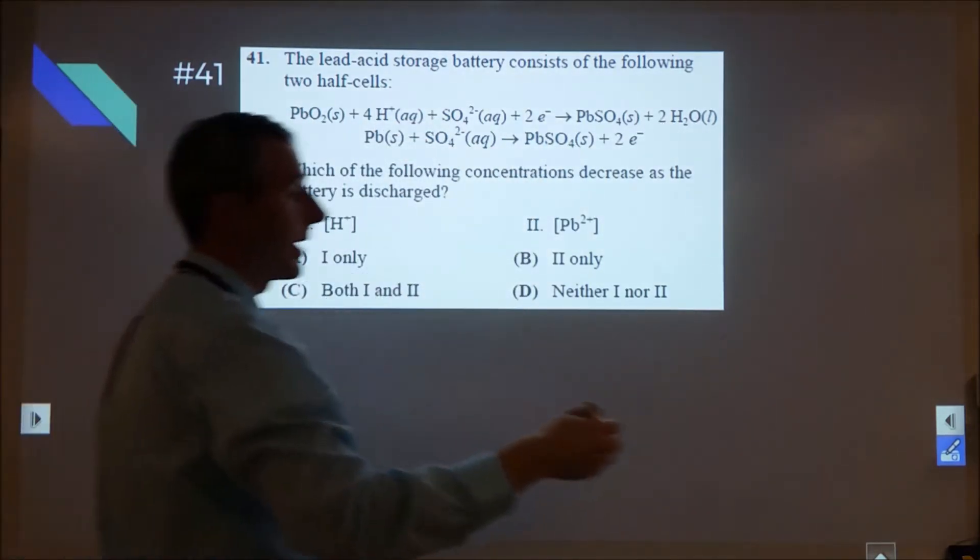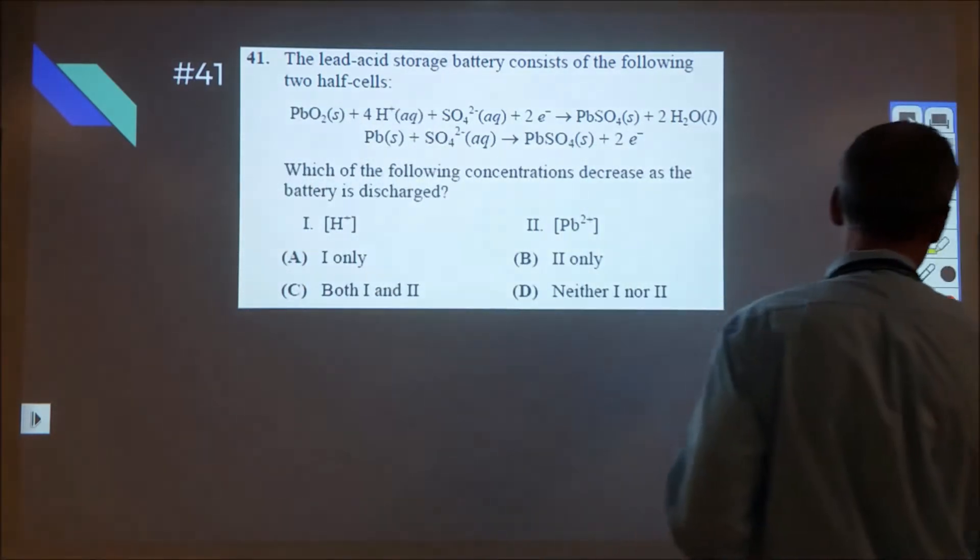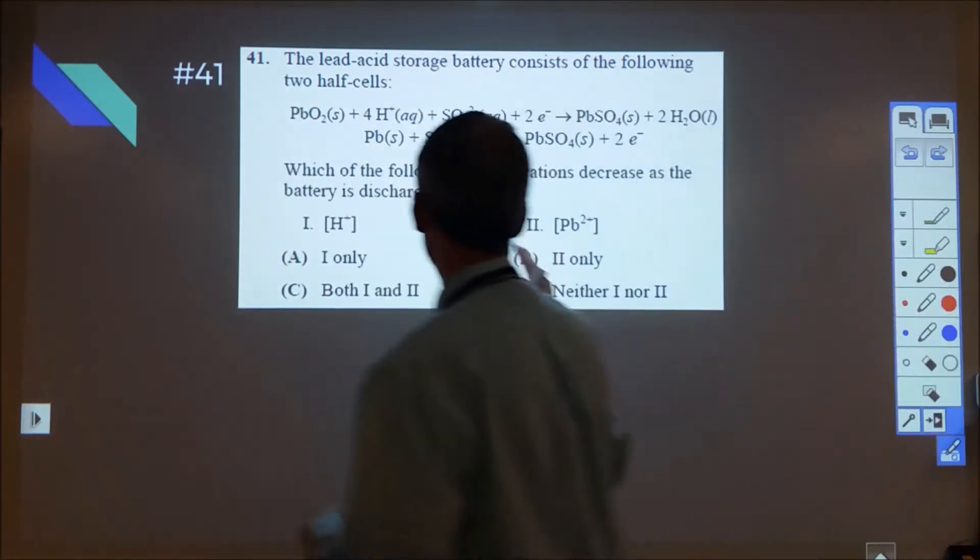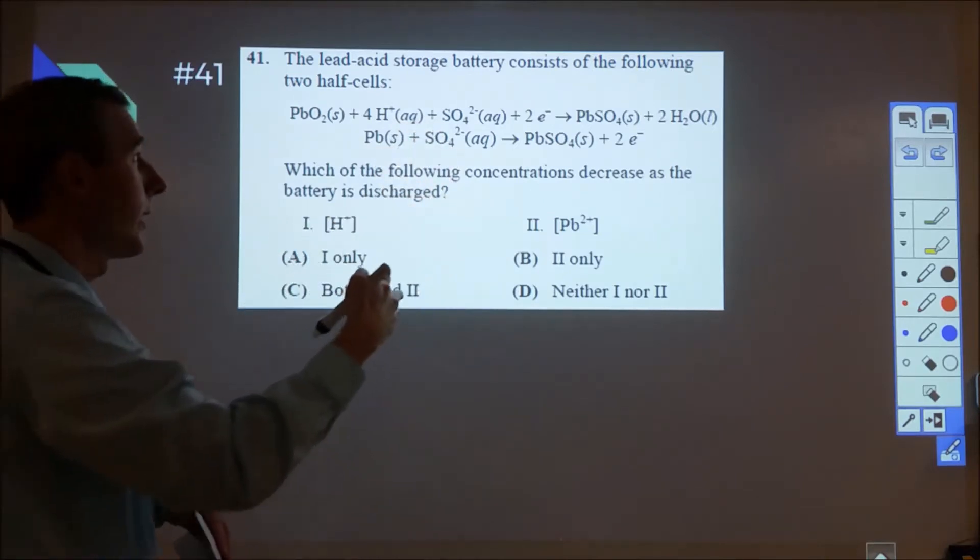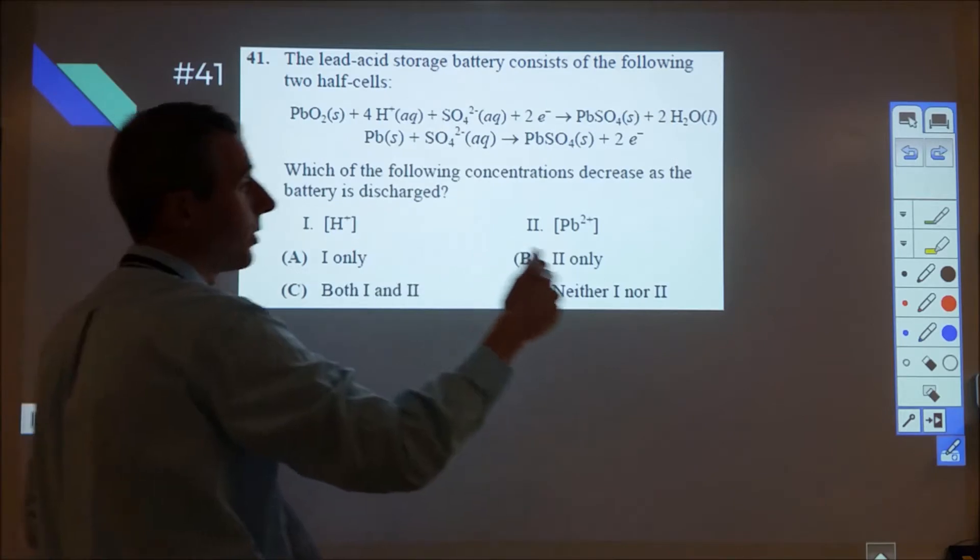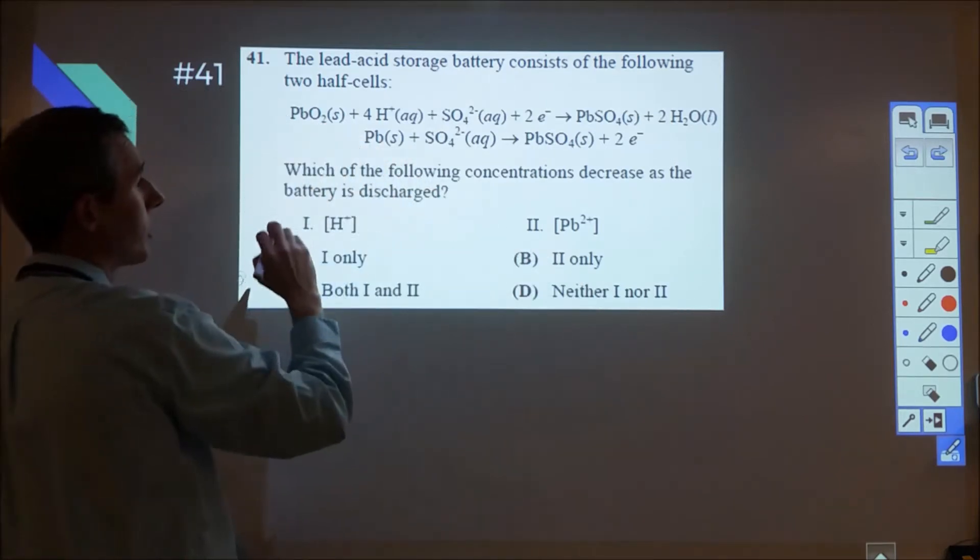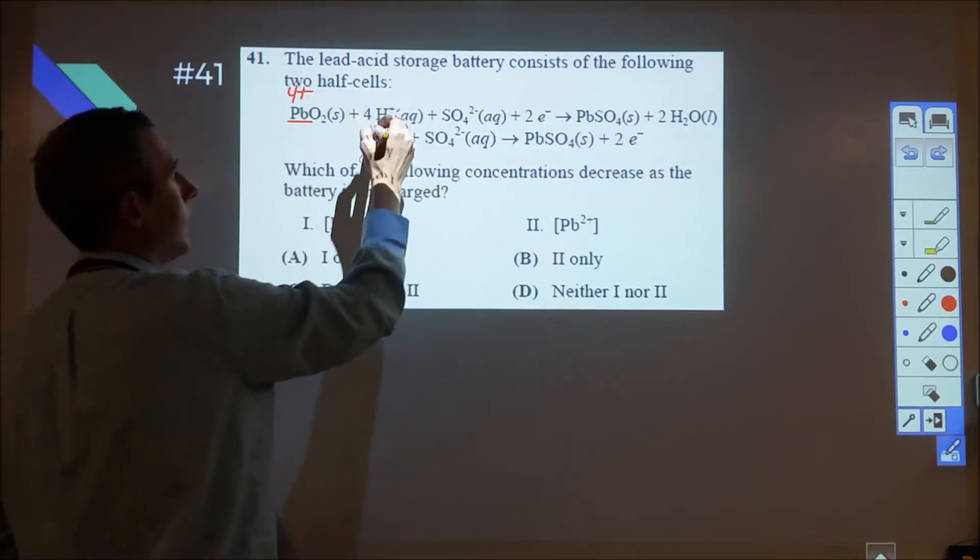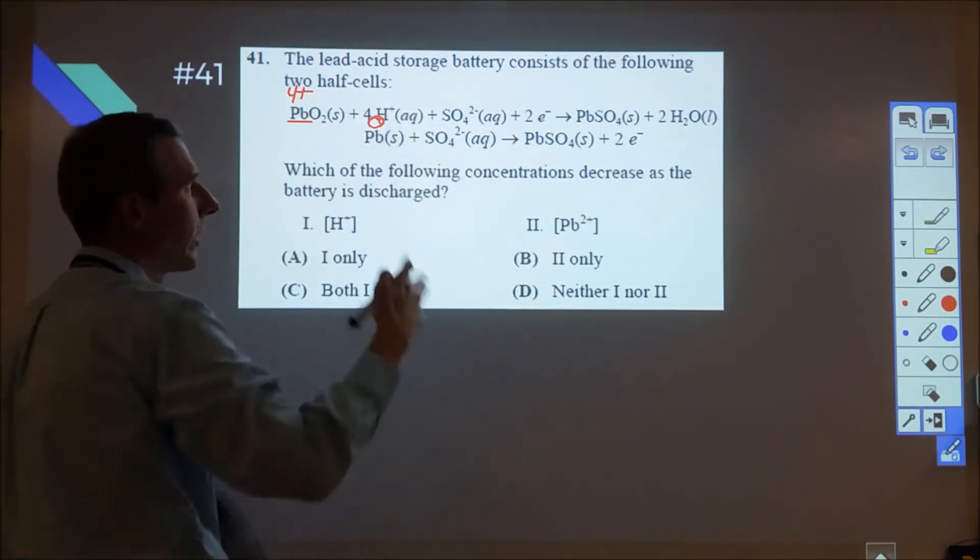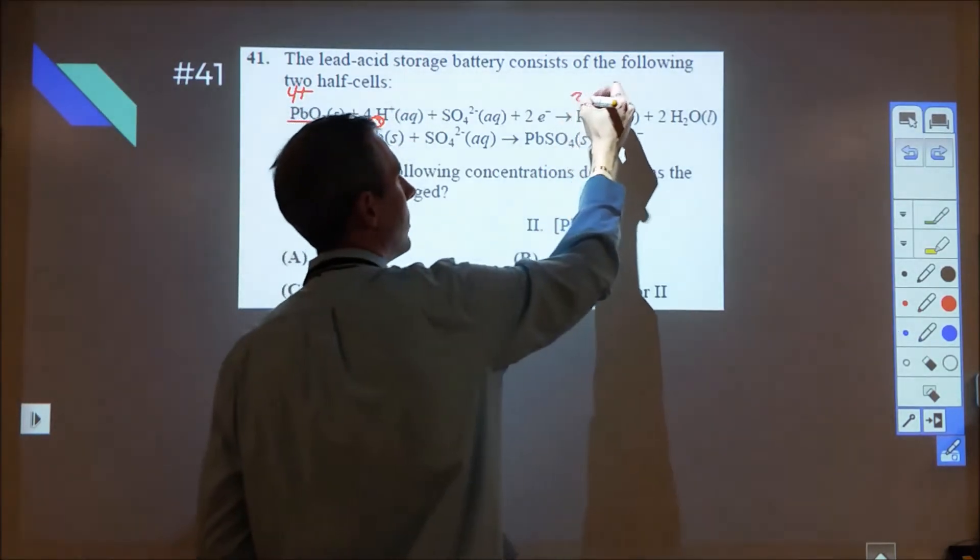It says which of the following decreases as the battery is discharged. The assumption here is that they've written these in the forward direction. So discharge meaning as written as opposed to being charged, which also happens as you drive, they're going to occur in reverse. We want to look at the condition of the lead as we're starting here. We're starting with lead 4+ and then lead with neutral metal, and they're both turning into lead 2+.